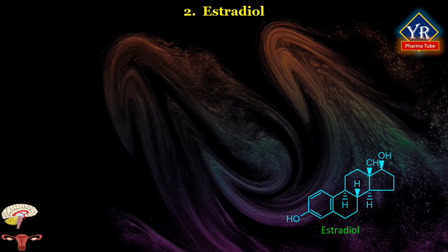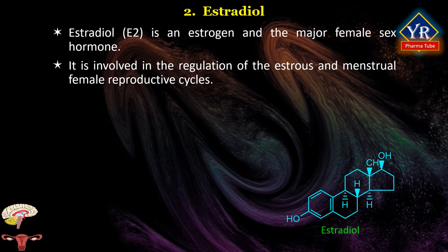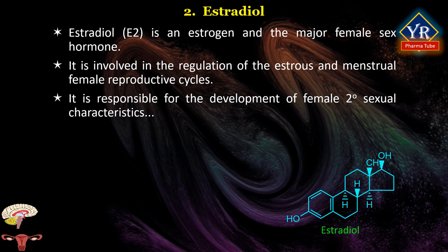Estradiol: the name is derived from 'estra' (a Greek-rooted term referring to the estrane steroid ring system) and 'diol' (indicating a compound bearing two hydroxyl groups). Estradiol is a major female sex hormone involved in the regulation of the estrus and menstrual cycles. It is responsible for female secondary sexual characteristics such as breast development, widening of the hips, and female-associated fat distribution. It is important in the development and maintenance of reproductive tissues such as the mammary glands, uterus, and vagina. It also has important effects in bone, fat, skin, liver, and the brain.